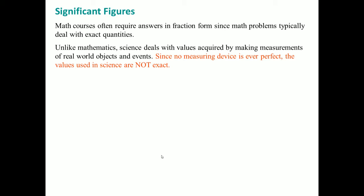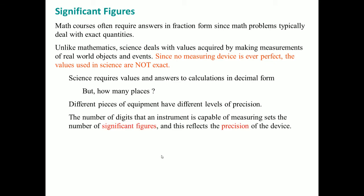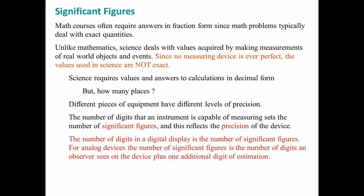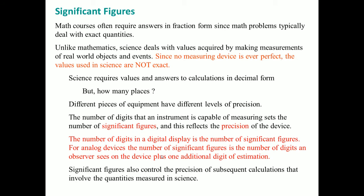Now we're going to talk about significant figures. Remember since no measuring device is ever perfect, the values used in science are not exact. The number of different digits an instrument is capable of measuring reflects their precision. The number of digits in any digital display is the number of significant figures. For an analog device, like something manual, the number of significant figures is the number of digits an observer can see on the device plus one more digit of estimation. Significant figures also control the precision of calculations involving the quantities measured in science.